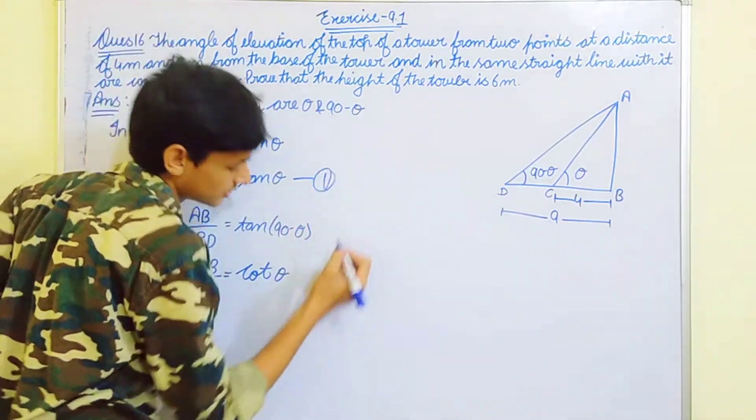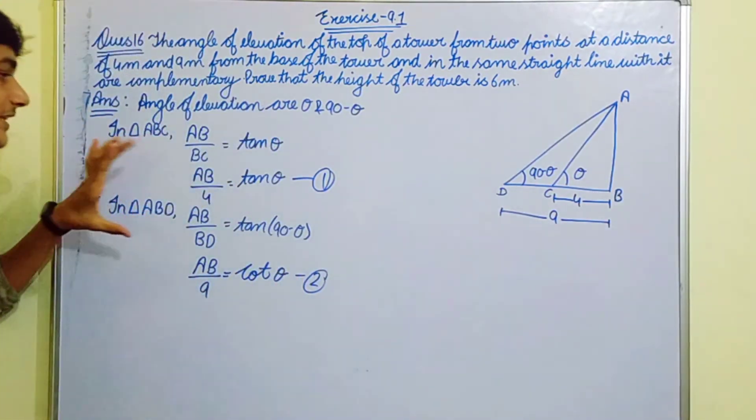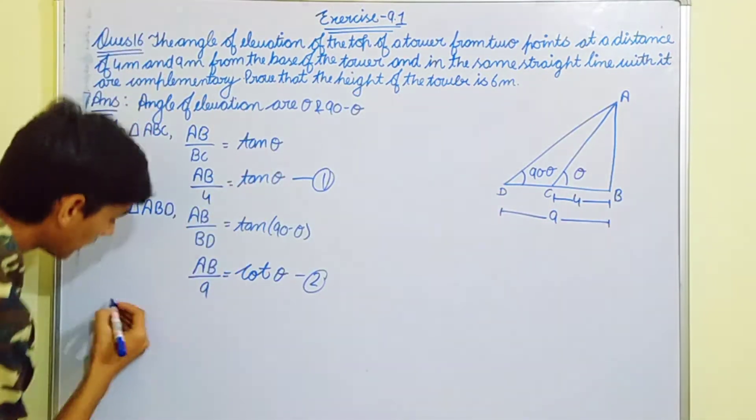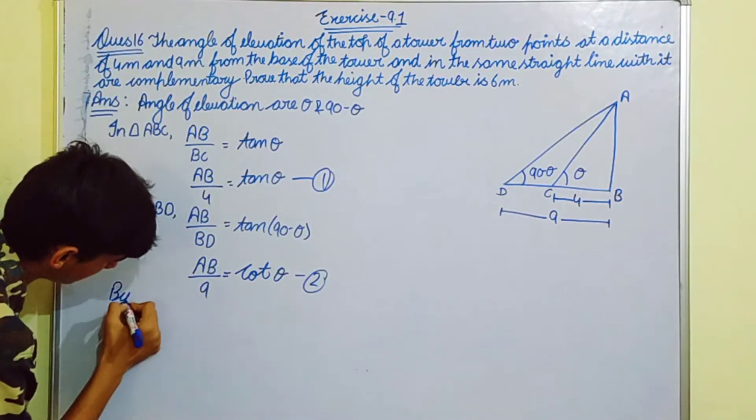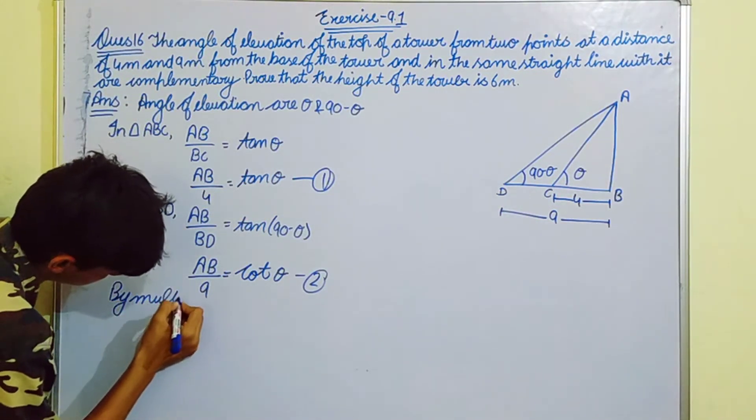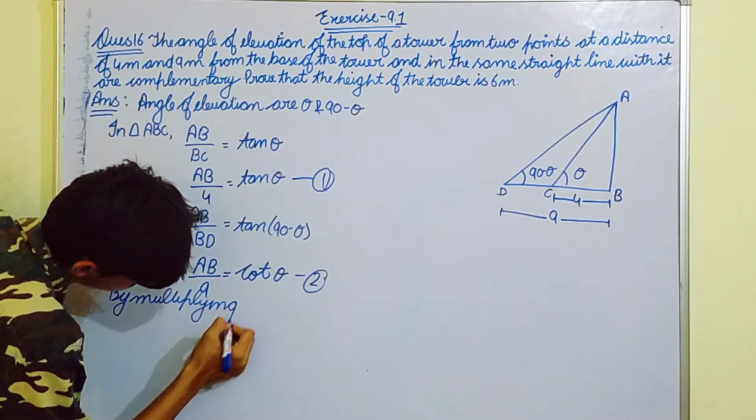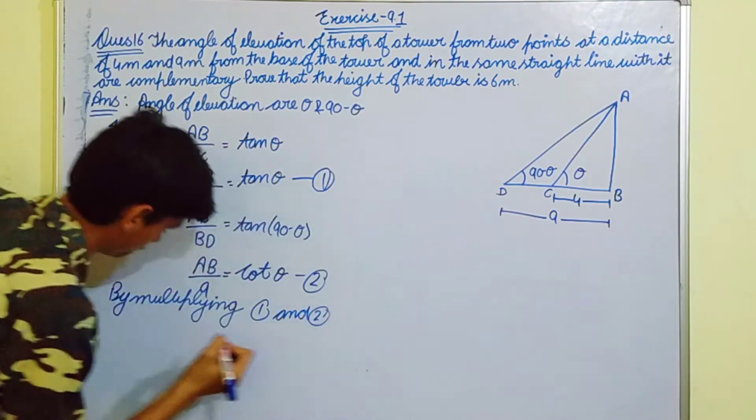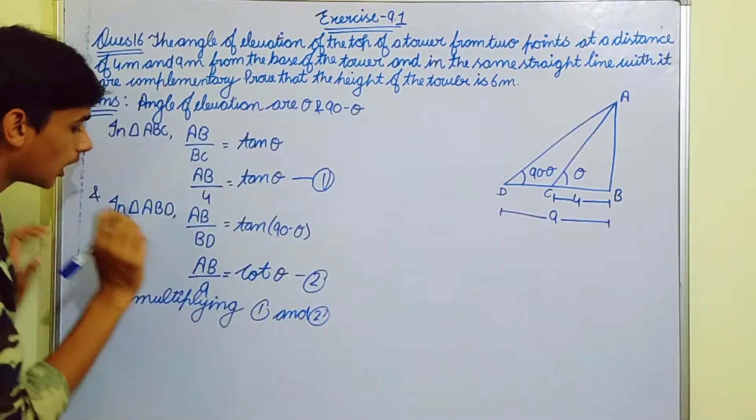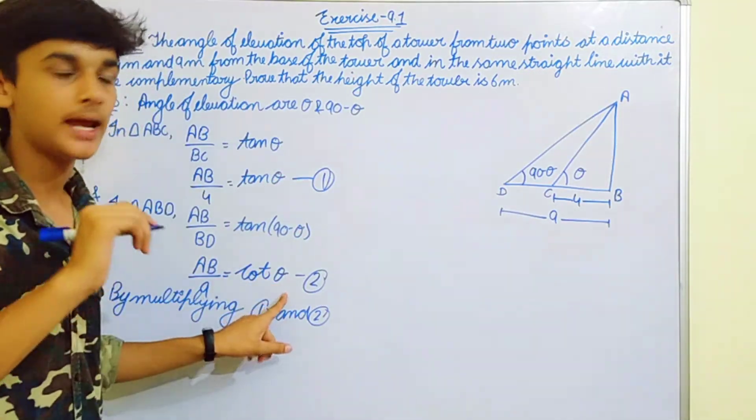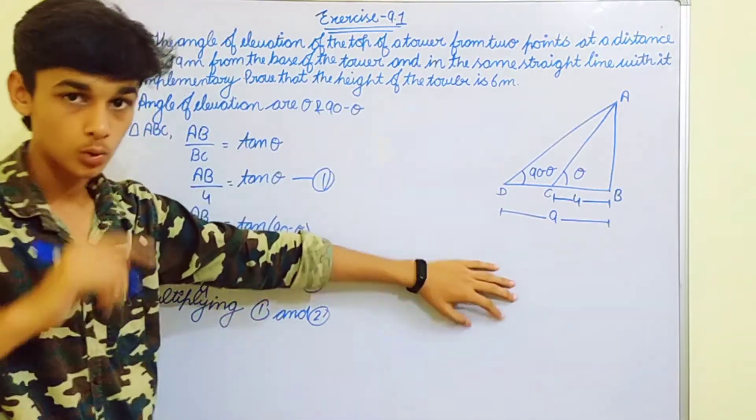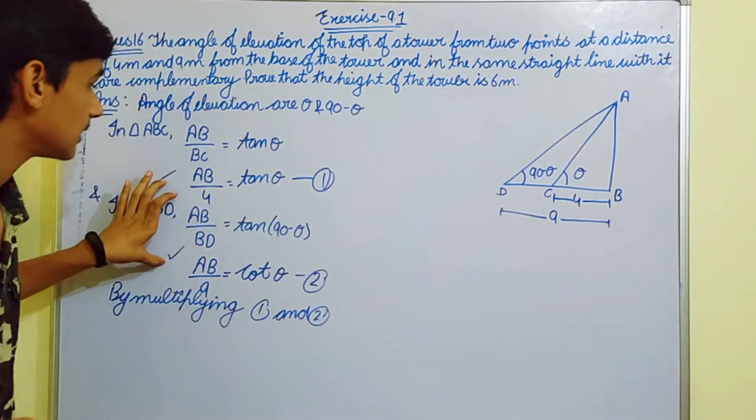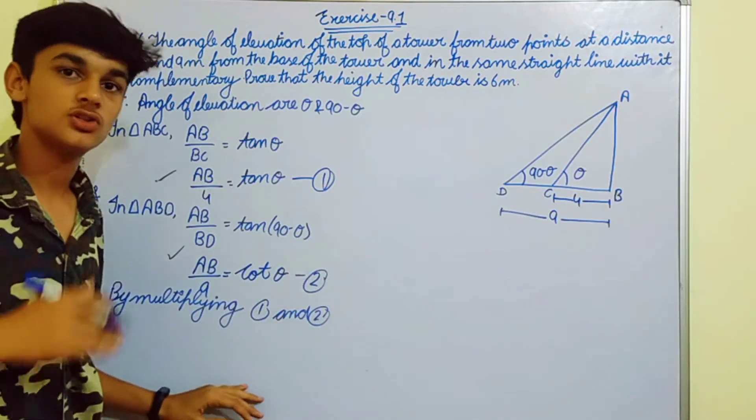This is first equation, this is second equation. So we have two equations now. By multiplying 1 and 2, at this point please remember - we have to multiply these two equations for solving further.